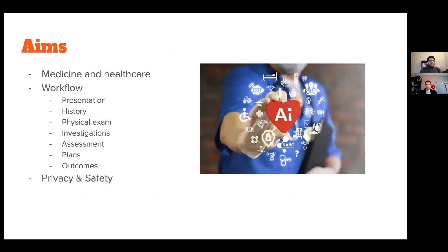We're going to talk about medicine and healthcare in general. We'll go through a typical clinical workflow of a disease — how it presents, the history and physical exam we obtain, the investigations we do, the assessments, plans, and outcomes. I'll also make a small plug about privacy and safety in terms of data in healthcare at the end.